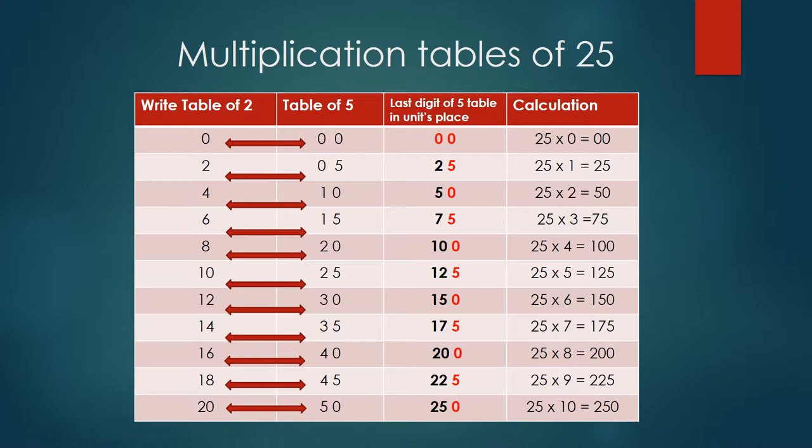But now, the very first step is you should know the table of 2. Okay, write down the table of 2. So table of 2: 2 zeros are 0, 2 ones are 2, 2 twos are 4, 2 threes are 6, all the way till 2 tens are 20. This is very simple, right?